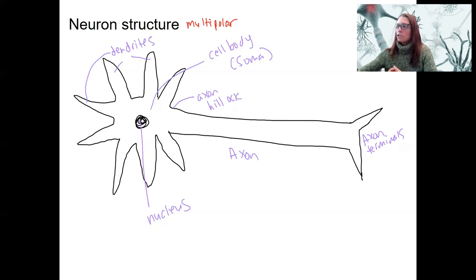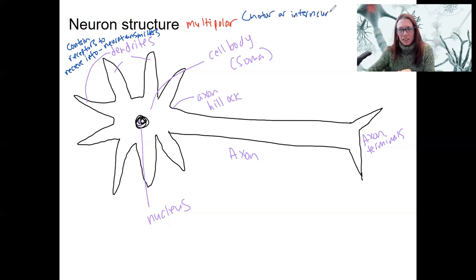I want to use this to talk about the function of neurons a little bit more in detail. These dendrites are going to contain receptors. That might make sense, to receive information. This is typically going to be chemical signals, neurotransmitters from another neuron. This is a motor neuron. Multipolar neurons are going to be motor or interneurons, they're not sensory. So that's why we can say the dendrites in this case are receiving neurotransmitter information.